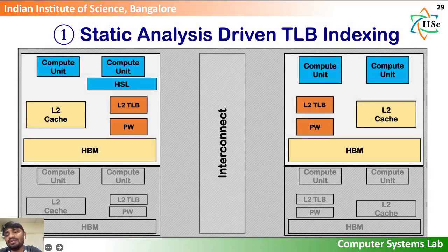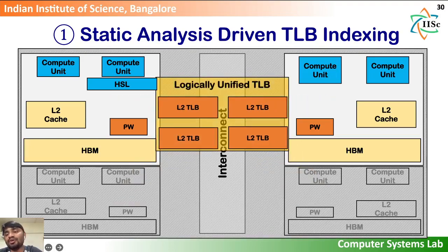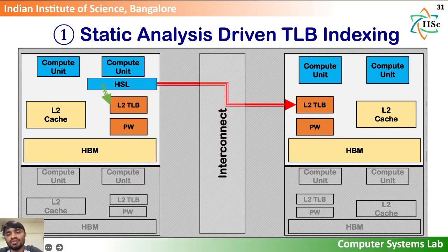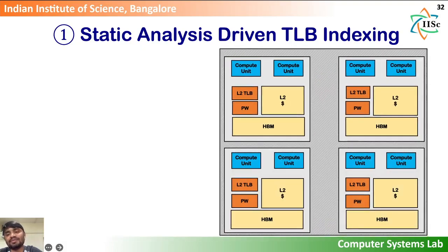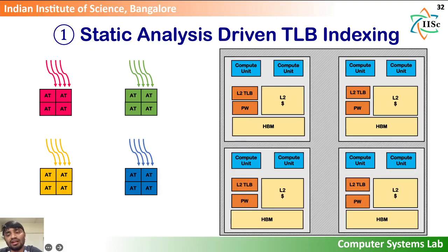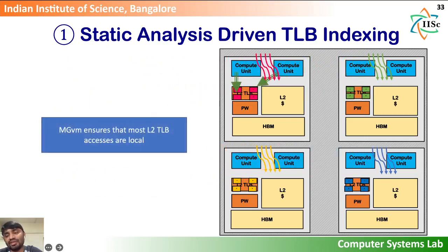We start out by using the L2TLB slices as a logically unified L2TLB to maximize TLB utilization. Thus, like the shared TLB design, we are able to leverage the aggregate capacity of the L2TLB slices. Next, we have to ensure that most L2TLB lookups are local. For each kernel launch, using the same static analysis that LAST used for data placement, we configure the HSL such that if data accesses are local, then the L2TLB accesses are going to be local too. By choosing the appropriate HSL for each kernel based on their access patterns, MGVM ensures that most L2TLB lookups are local.